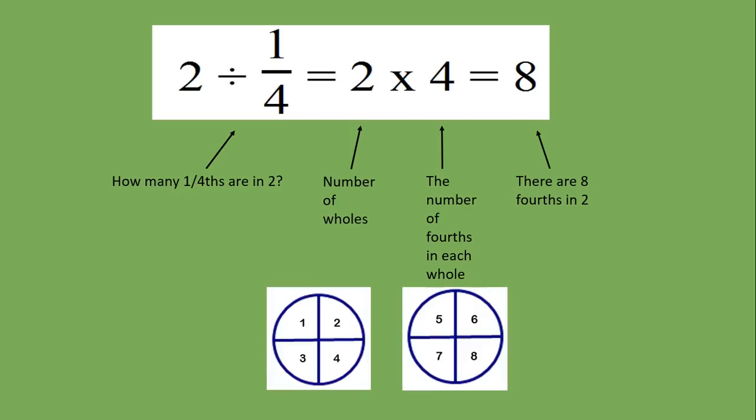Here's kind of a visual of what that looks like. I have two wholes, each of them have four fourths in them. So two times four is eight.